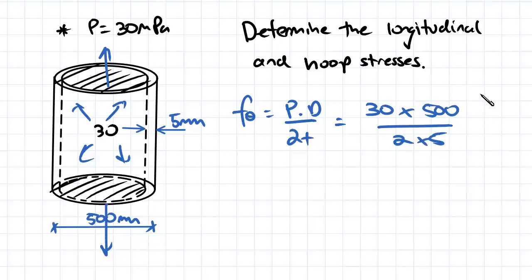The key thing here is that we're putting in our pressure as megapascals and we're putting in our units as millimeters. But because we've got millimeters and millimeters at the bottom for our length, our thickness and our diameter, those two units are going to cancel and we're going to be left with an answer in megapascals.